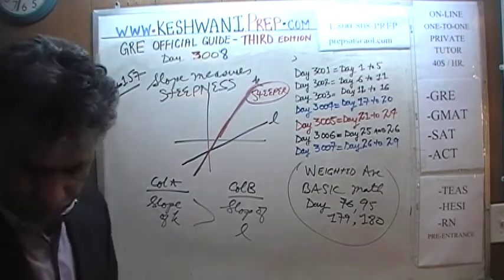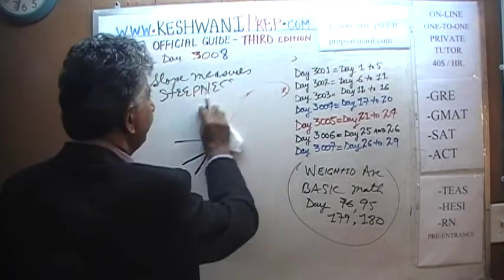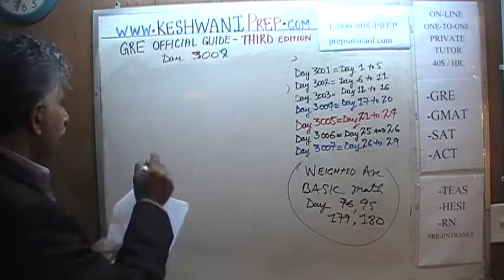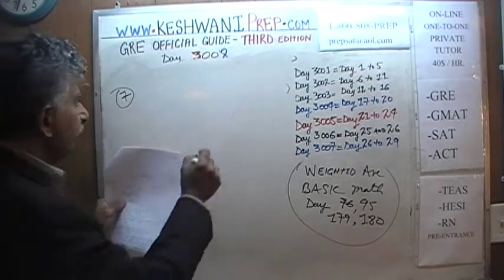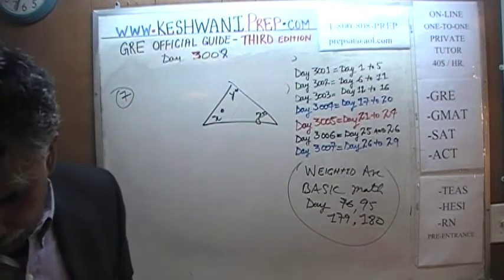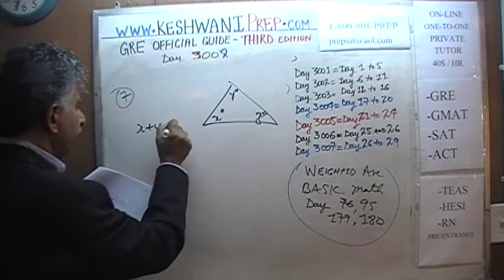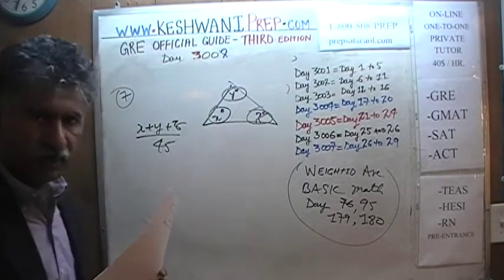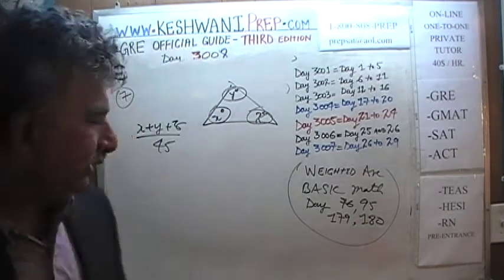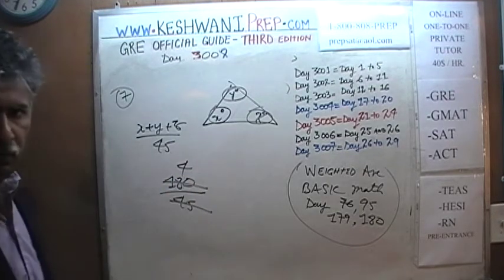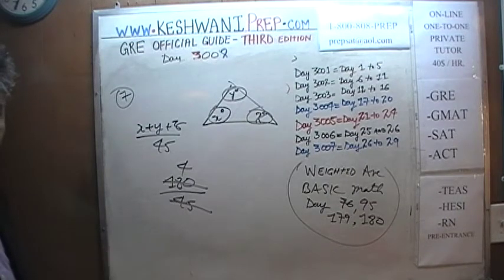Problem number 7 — another simple one. We are given a triangle with angles X degrees, Y degrees, and Z degrees. The question is: what is the value of X plus Y plus Z, divided by 45? We know that the sum of angles in any triangle is 180. So X plus Y plus Z equals 180. Then 180 divided by 45 is 4, because half of 180 is 90 and half of 90 is 45.